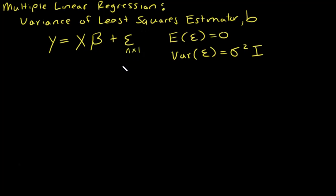Epsilon is our model error, it's an n by one vector of model errors. Y is an n by one vector of response variables or responses.